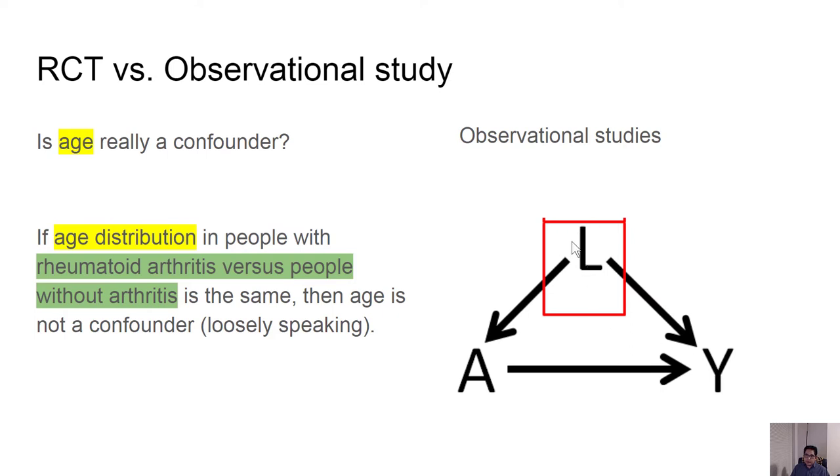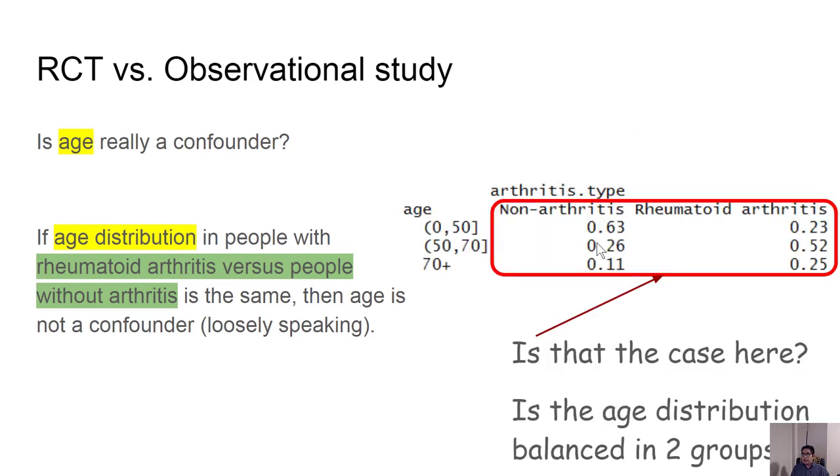But it is still possible to loosely say whether the age variable is imbalanced or not. When I'm saying this age variable is a confounder or not and I'm trying to determine that from a dataset, that's not a good practice. But still I can take a look at the dataset and figure out whether the distribution is balanced or not.